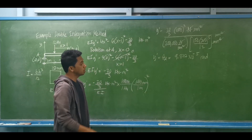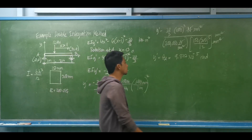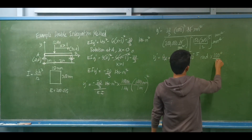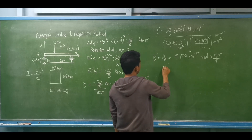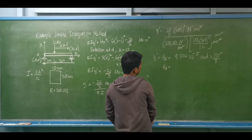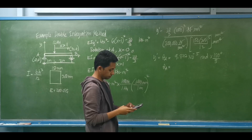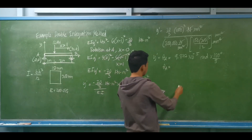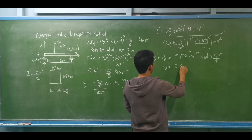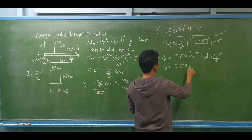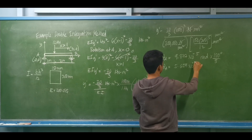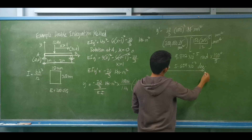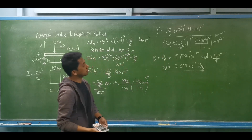Converting to degrees: multiply by 180 degrees divided by π. The rotation at A is 5.659 times 10 to the negative 3 degrees. Note that the value is negative, indicating the rotation is clockwise.